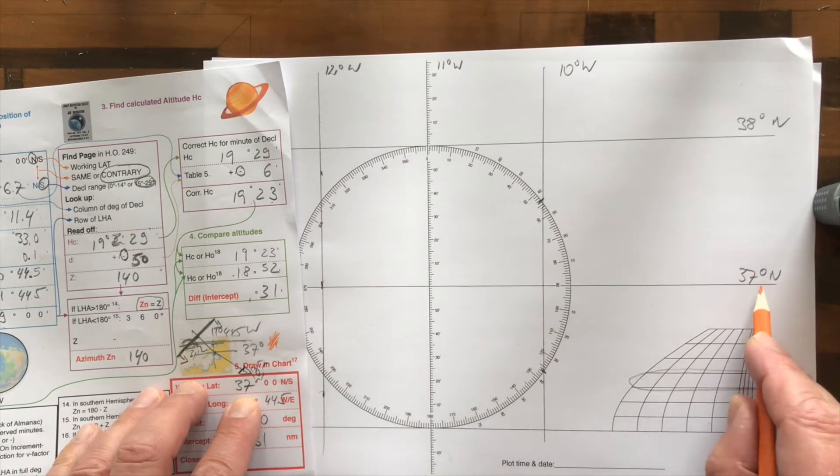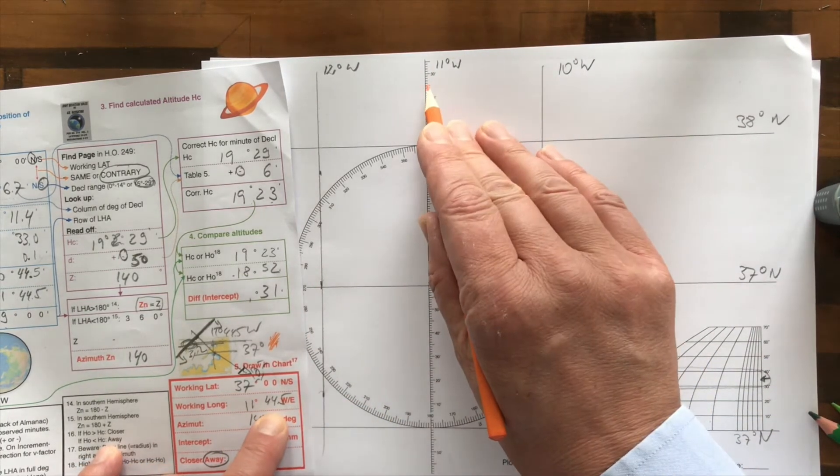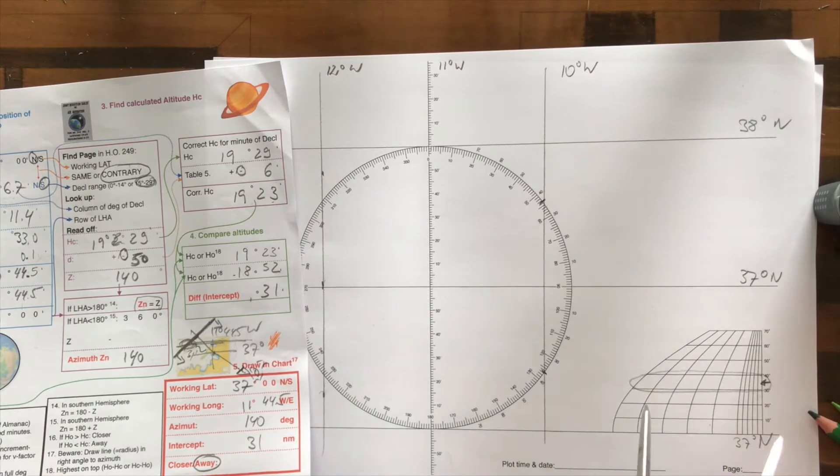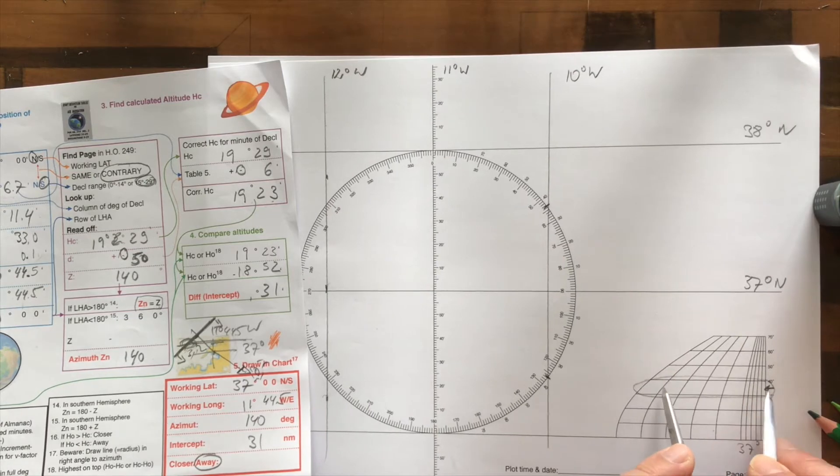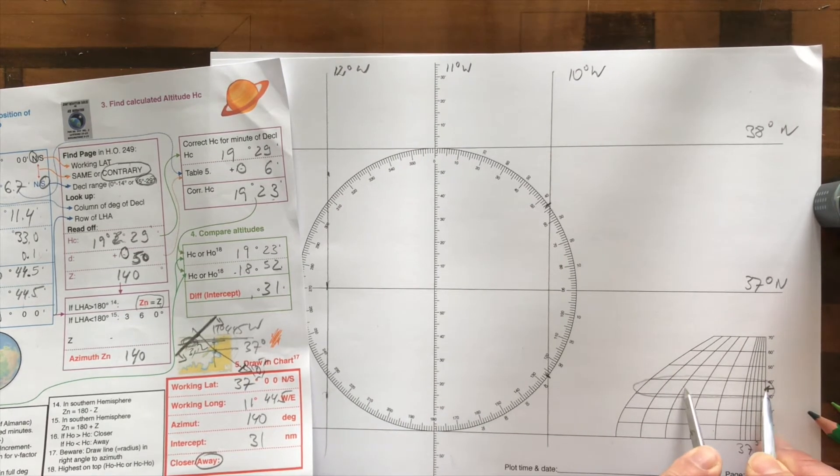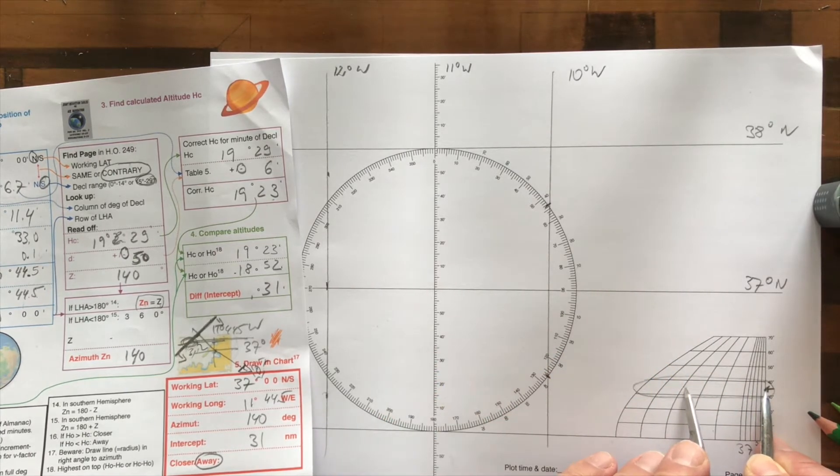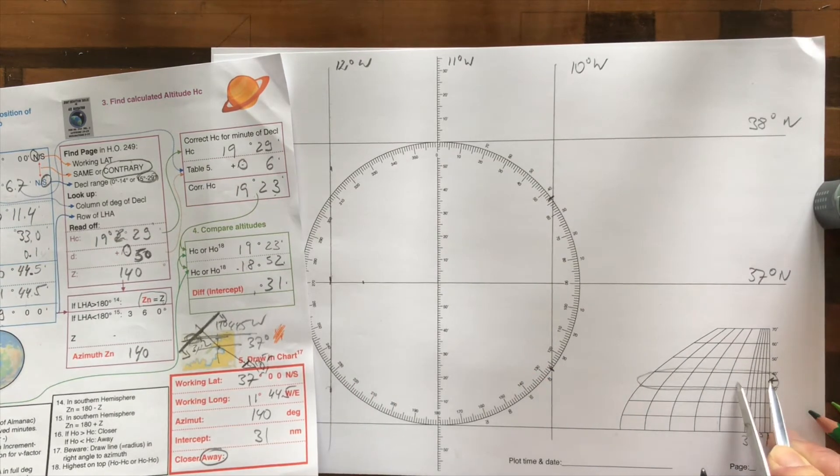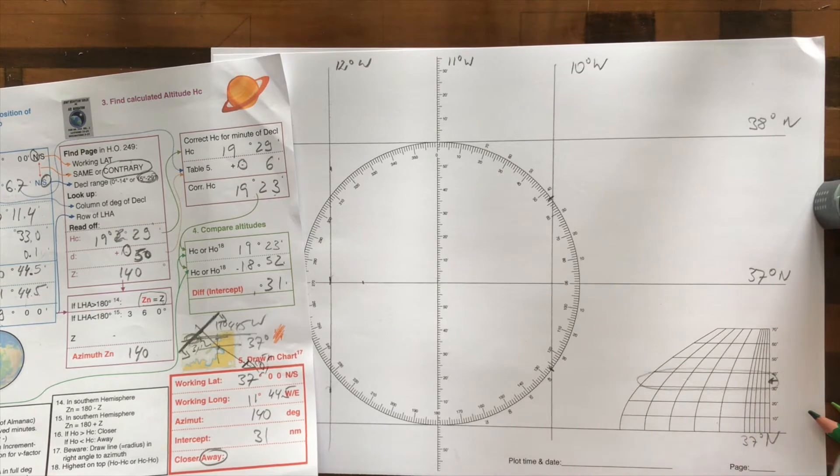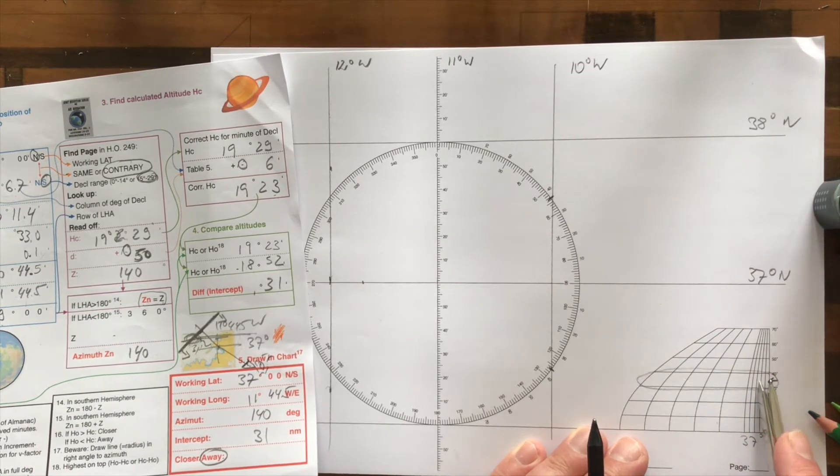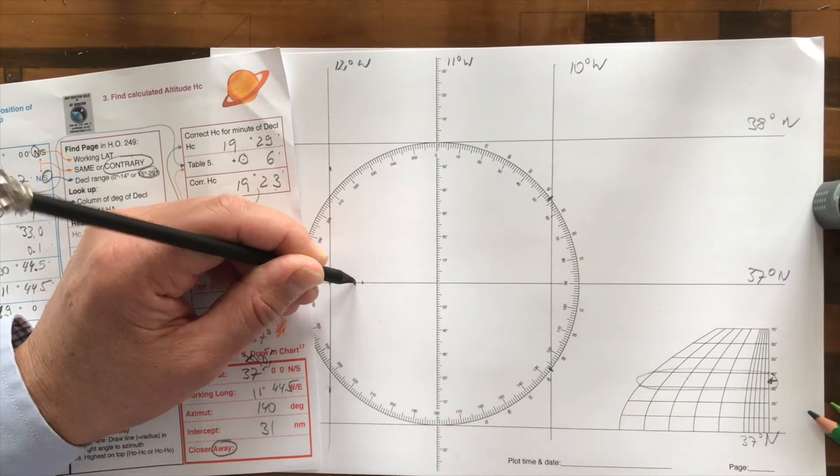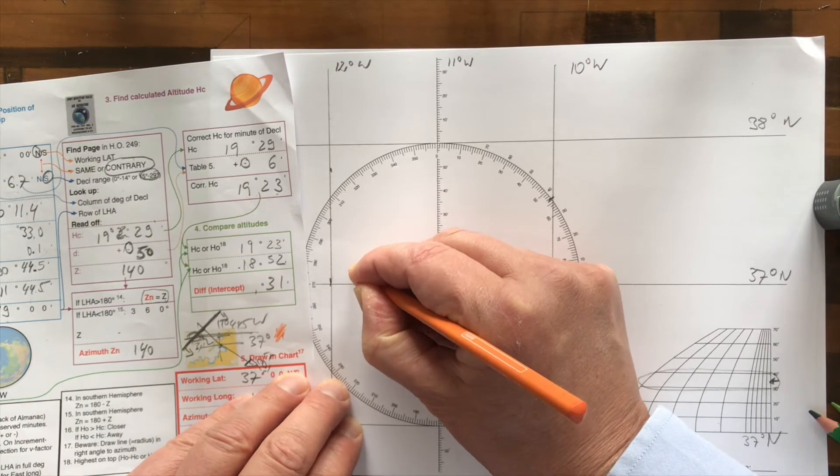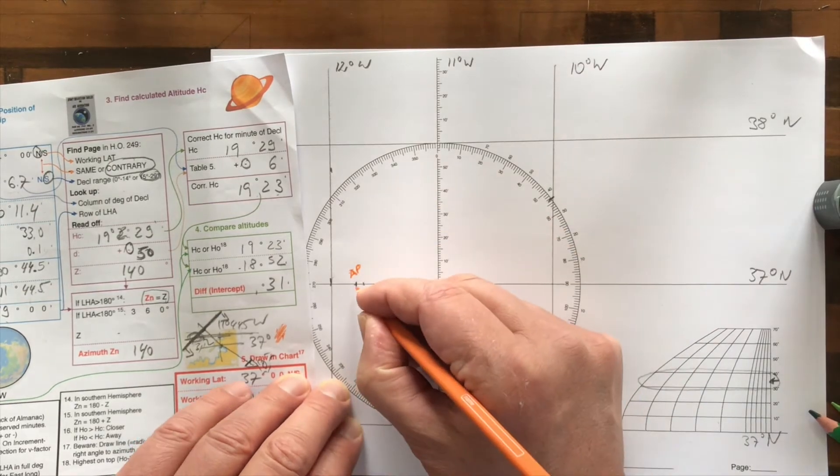We have a working latitude of 37 degrees north, that's here. We have a working longitude of 11 degrees and 44 and a half. So that would be a bit in that direction, 44. You can say 40 is here, one, two, three, four. Make a little dot there. But we need 44 and a half, that's two of those small ones. This is our assumed position for Jupiter.